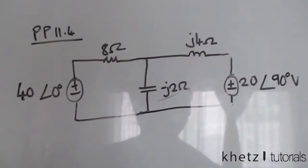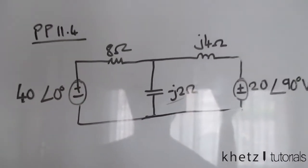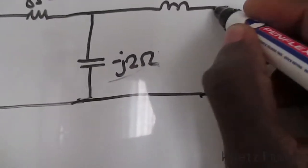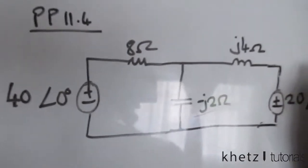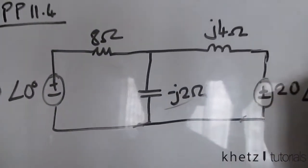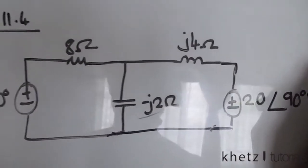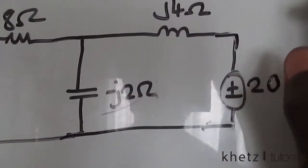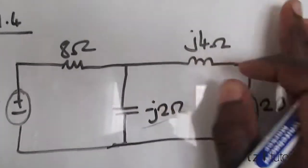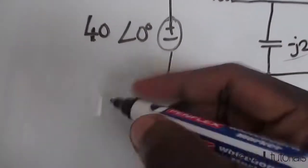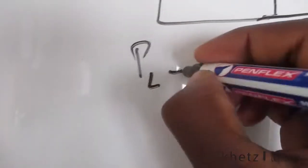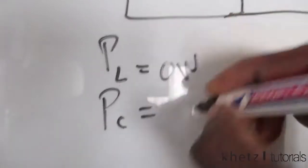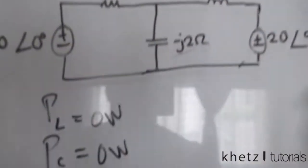Welcome to CAT's tutorials. In this video I'll be covering practice problem 11.4. We're given a circuit and asked to find the average power absorbed by each element. For reactive loads or storage elements like an inductor and capacitor, we know that the average power absorbed by each of these is zero watts. We have five elements in the circuit and we've solved two.